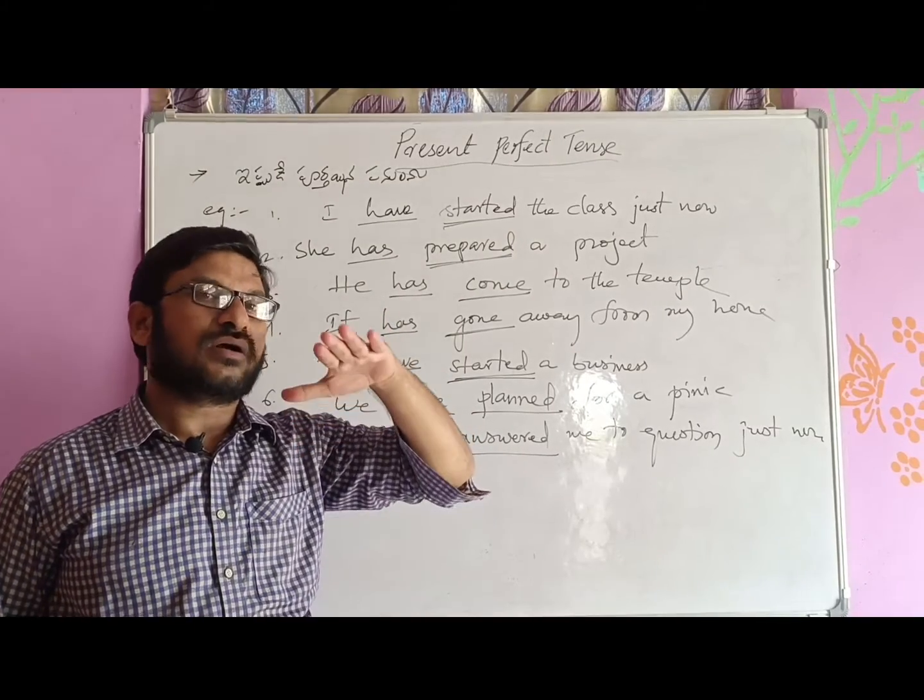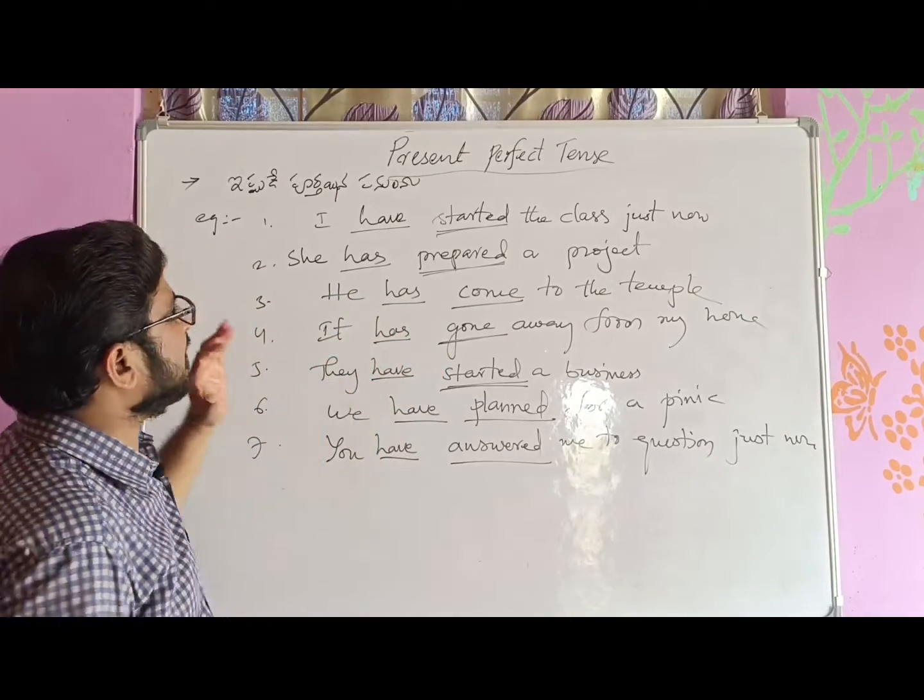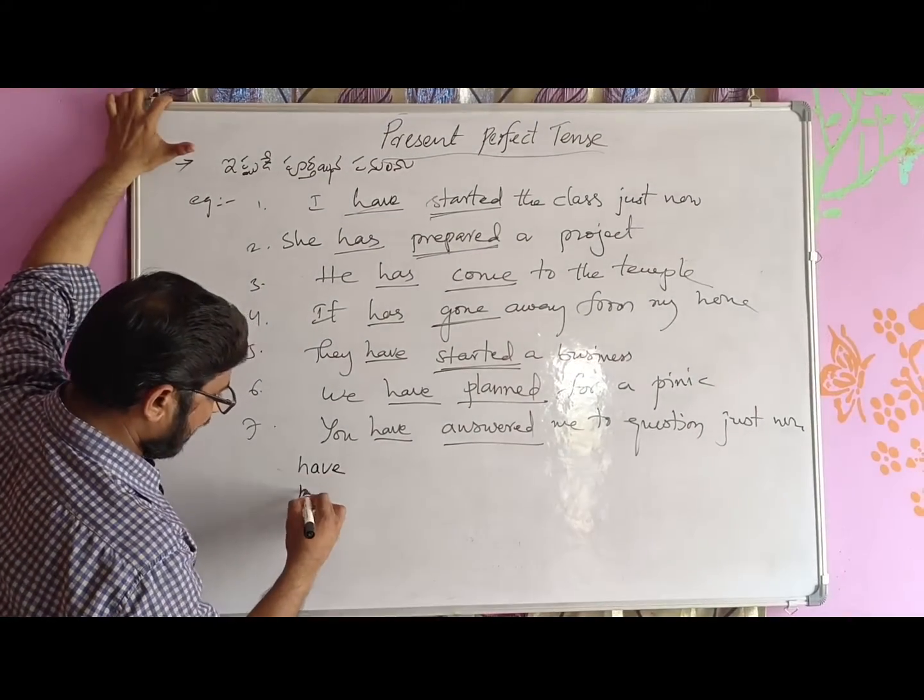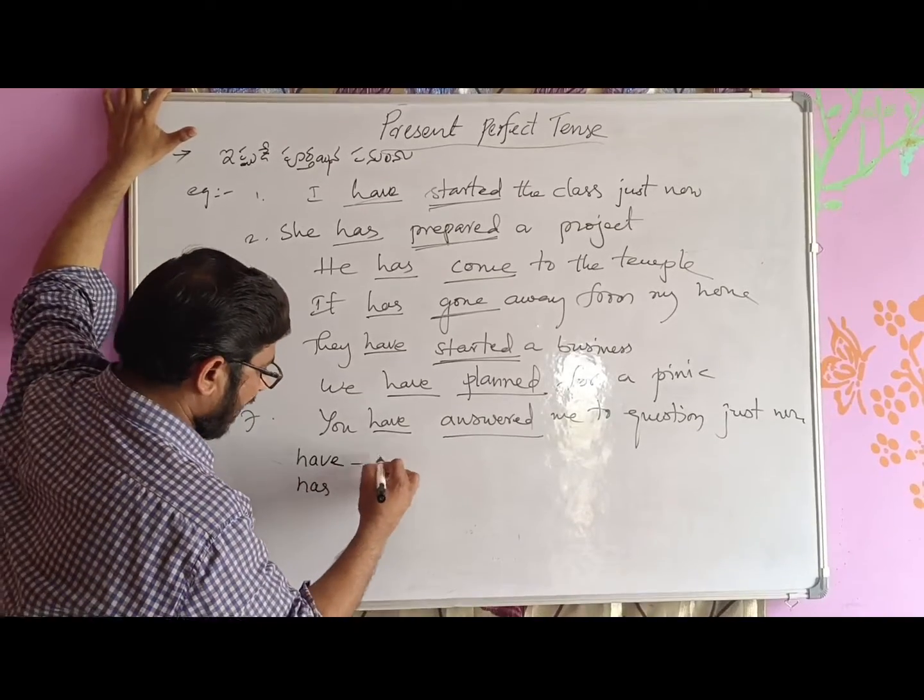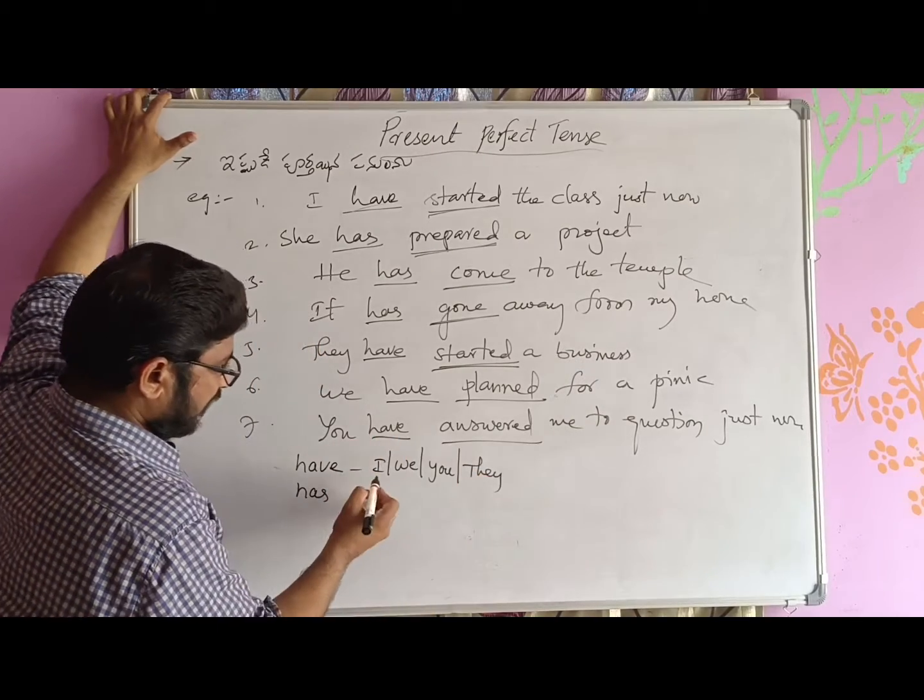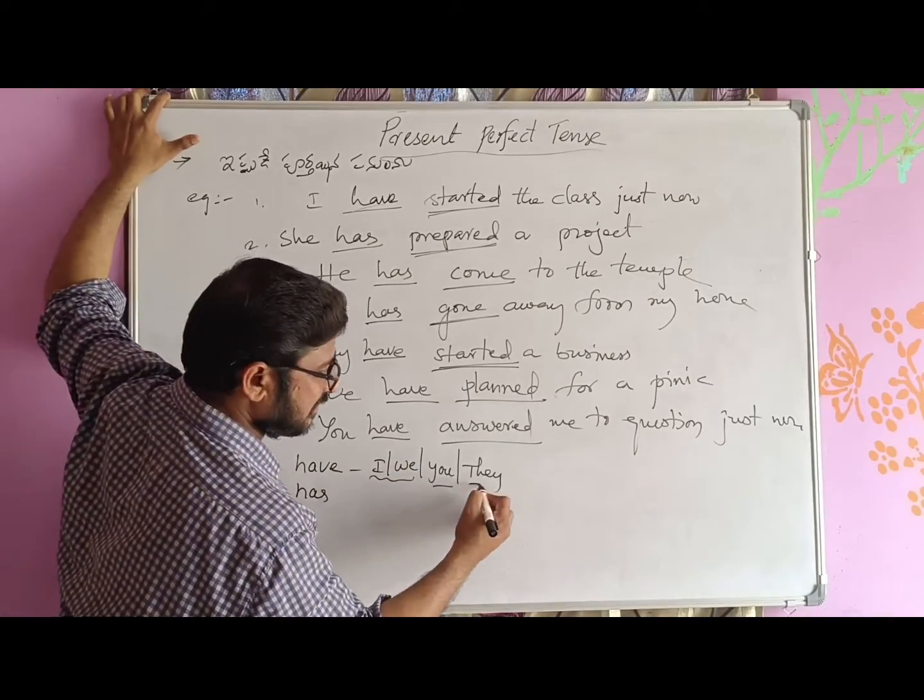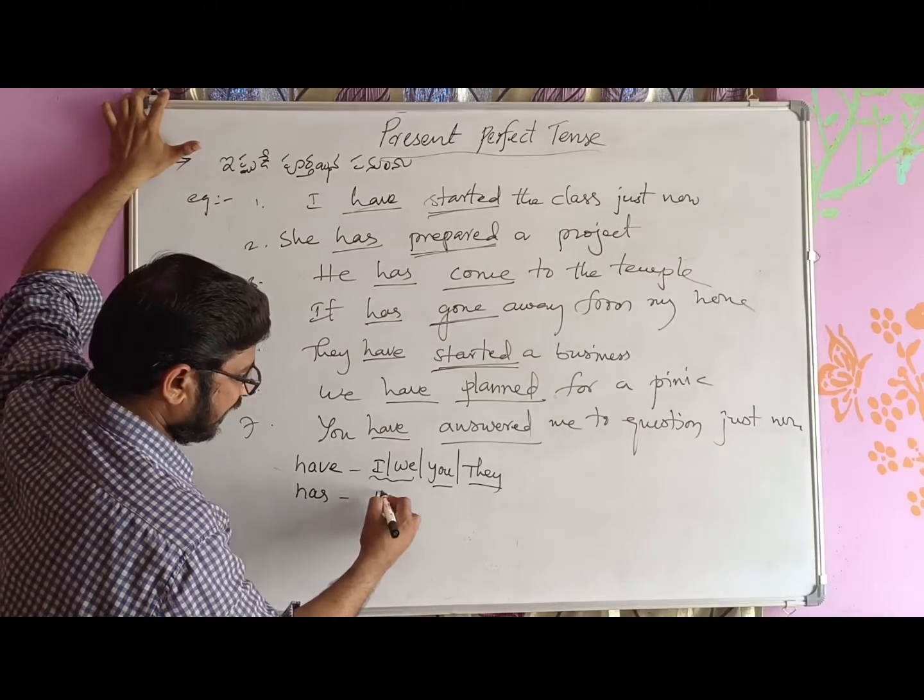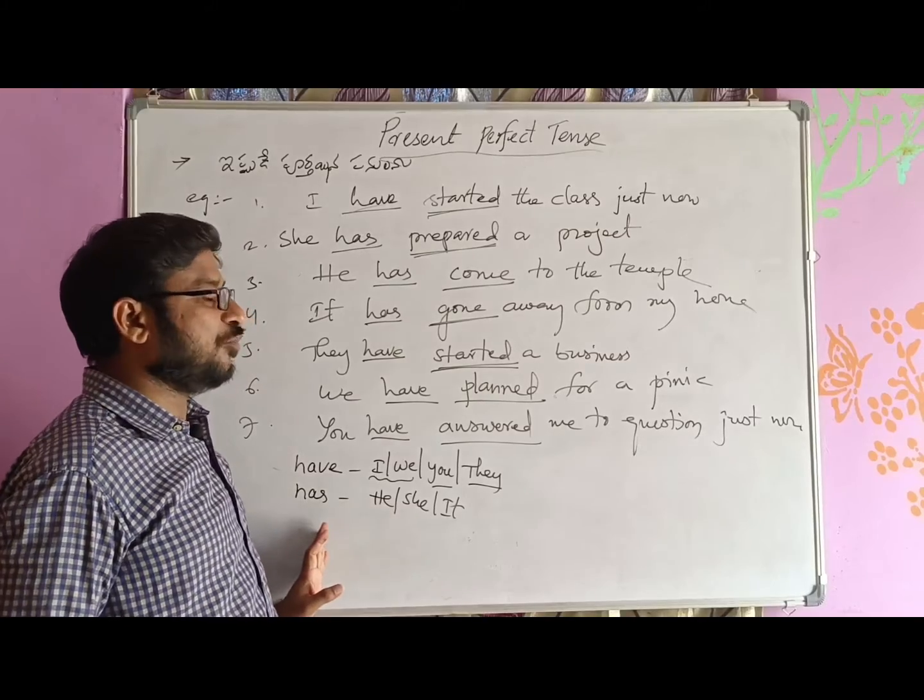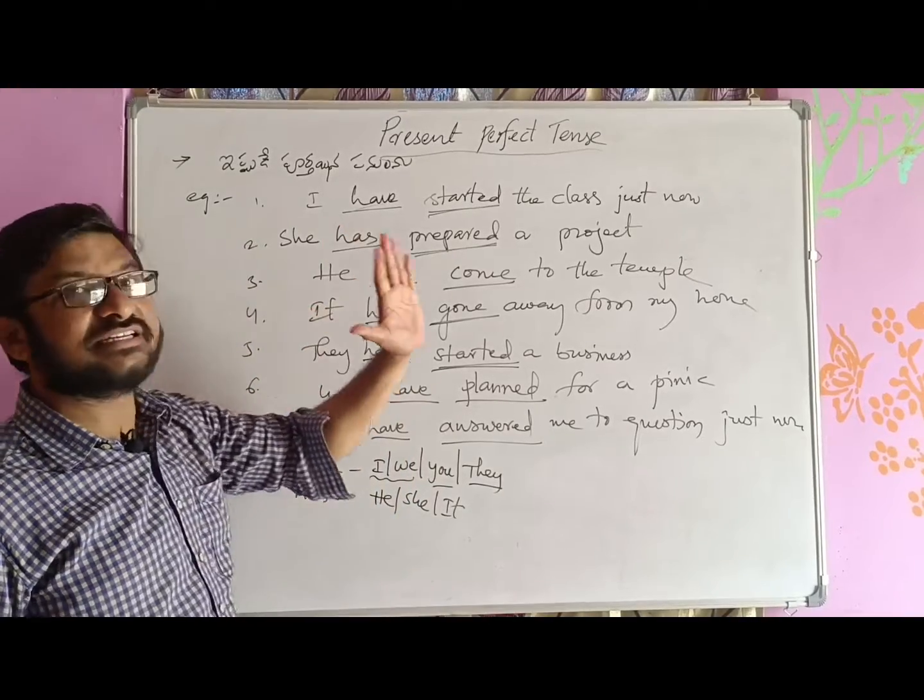So now, how are we doing this? We use 'have' with I, we, you, and they. I, we - first person singular and plural; you - second person; they - third person plural. We use 'has' with he, she, it - third person singular numbers.